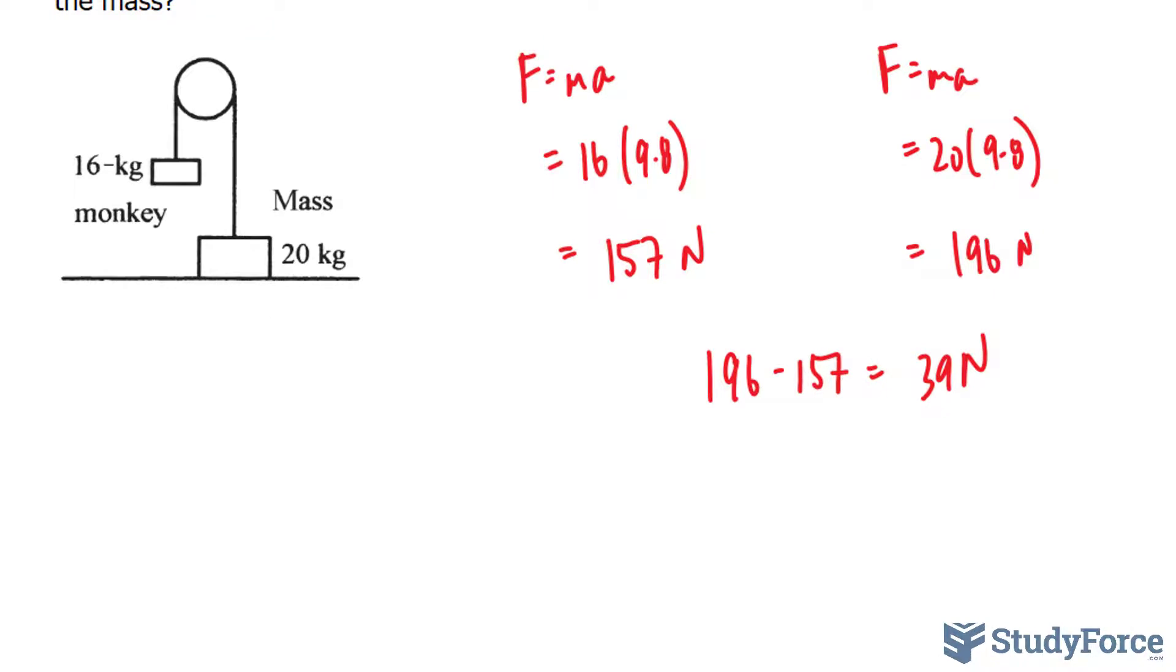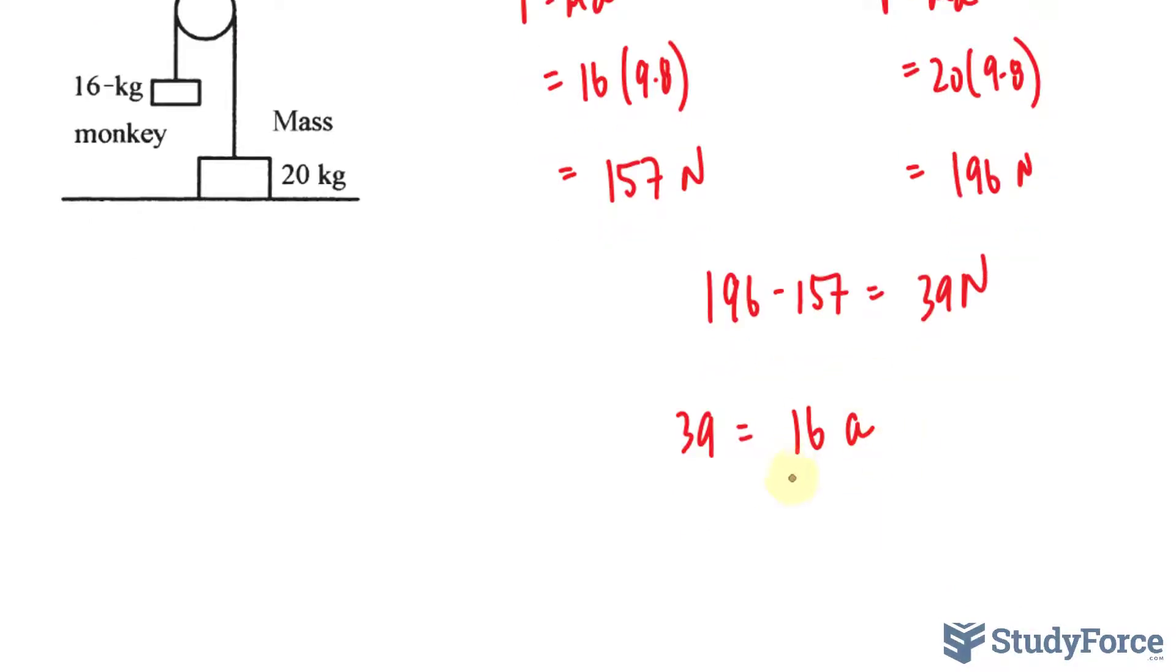So now I need to find out the added acceleration that the monkey needs to exert. Using again the same formula, where this time the force is 39, the monkey's weight is 16, and by solving for A, we get the added acceleration. To solve for A, we divide both sides by 16.